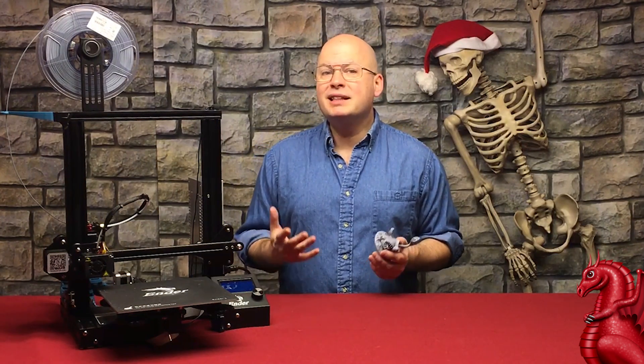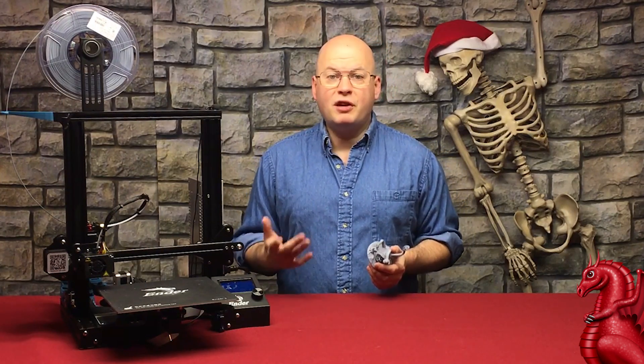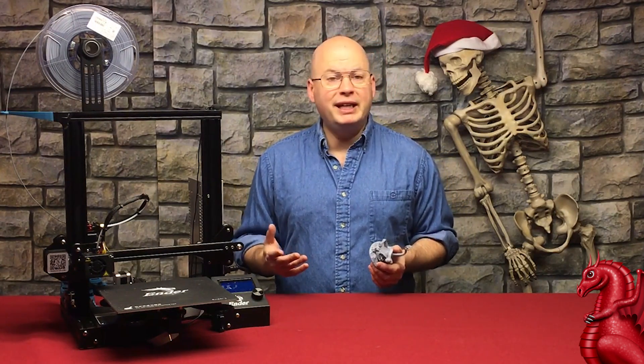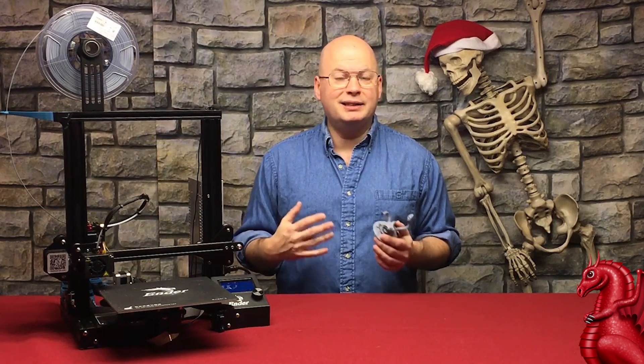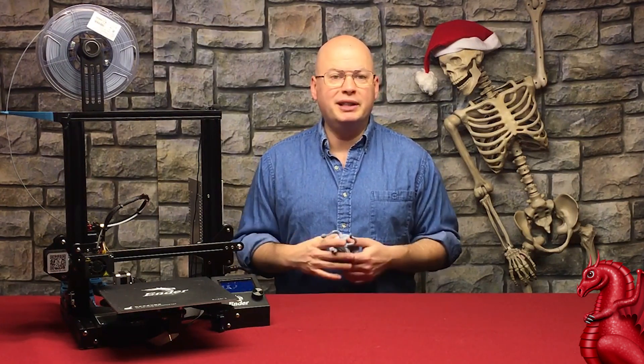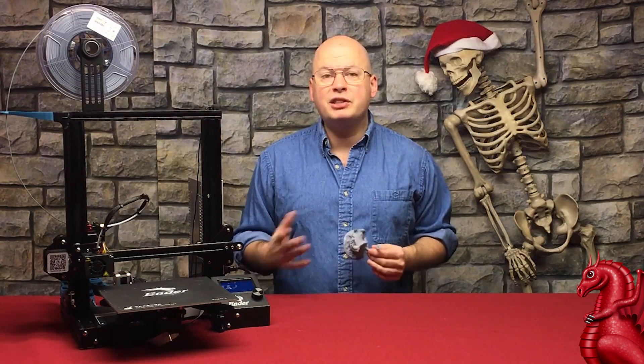Now, when I first looked at this, this looked like inconsistent extrusion. My Prusas suffer from this a lot, especially my Mark III. This would be about the best quality I could get off of that. The inconsistent layer extrusion is a known issue on GitHub. But from an Ender 3, that should not be looking like that. So I knew something was wrong.